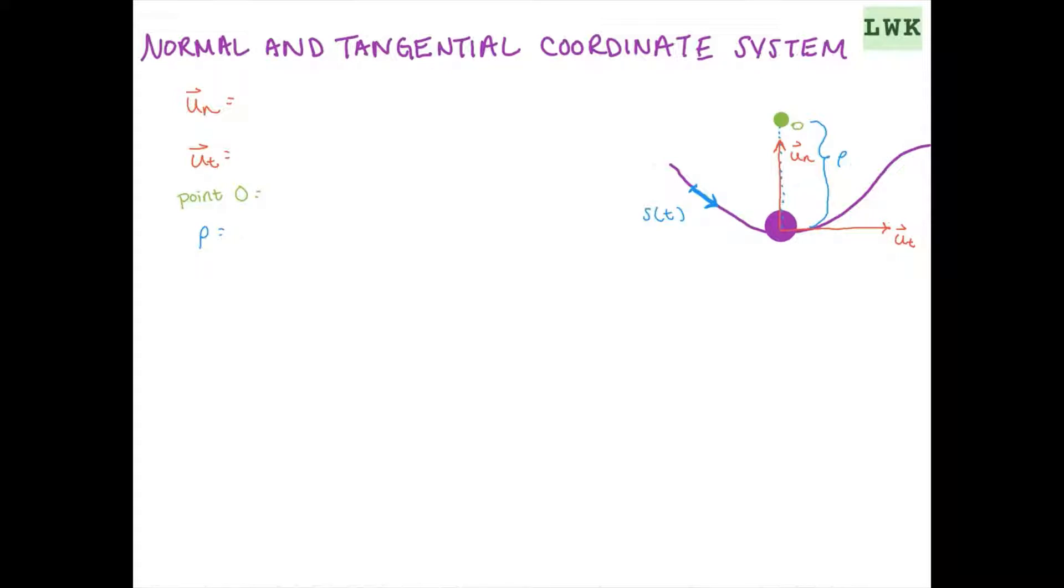So with this system, our normal and tangential axes are going to be on the particle wherever it is. So here you can see we have our red un and our red ut. And un and ut, being that they follow the particle, are going to be functions of time.